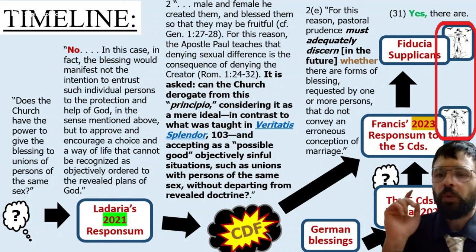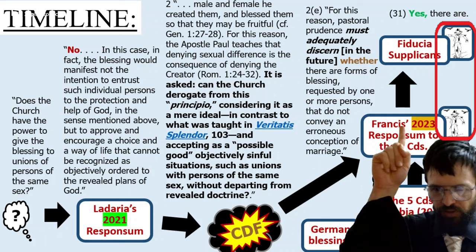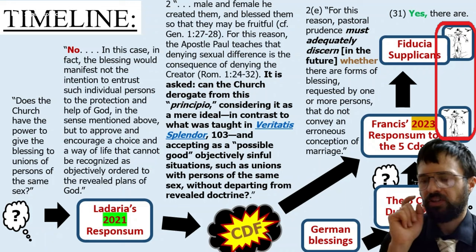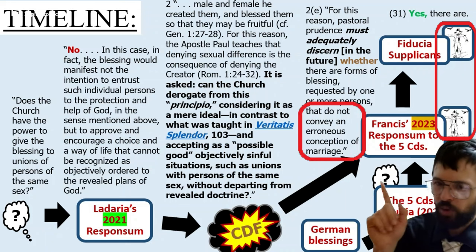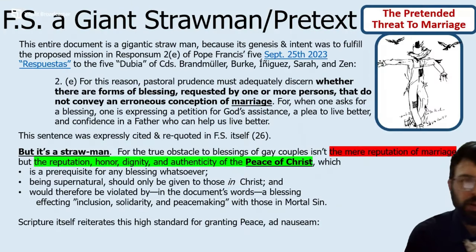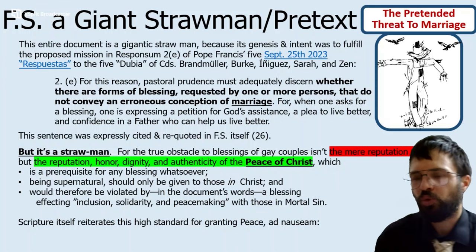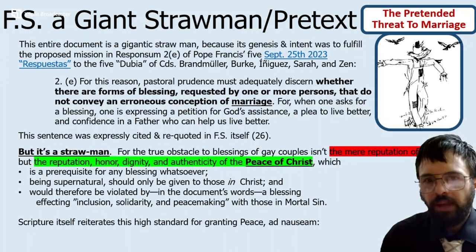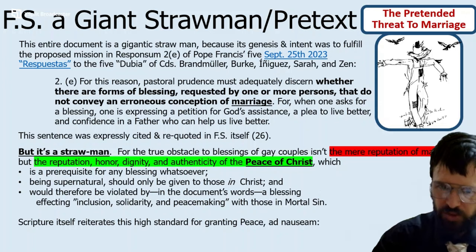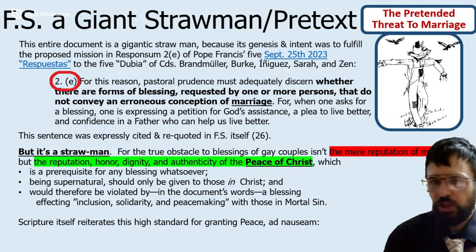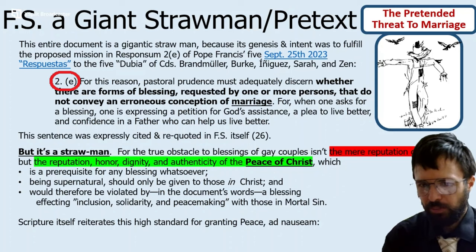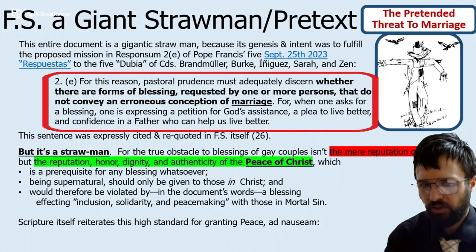Working backward, we can see there are two straw men: a Fiducia Supplicans straw man, and we can see that straw man was already there in Francis' 2023 response to the five Cardinals. That straw man is the claim to defend the marriage from erroneous conceptions. It was a giant straw man and pretext. Why? Because the entire document was a response to those five Cardinals' dubia, particularly dubia number two, where Francis and Fernandez said pastoral prudence must discern whether there are responses that wouldn't convey an erroneous conception of marriage. But that's a straw man.